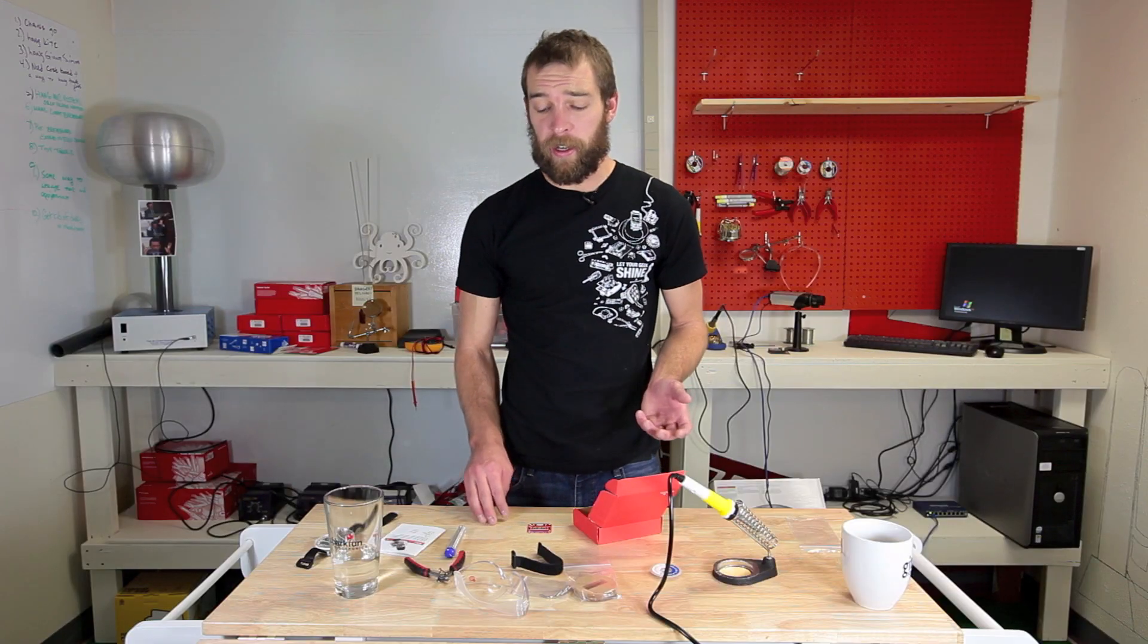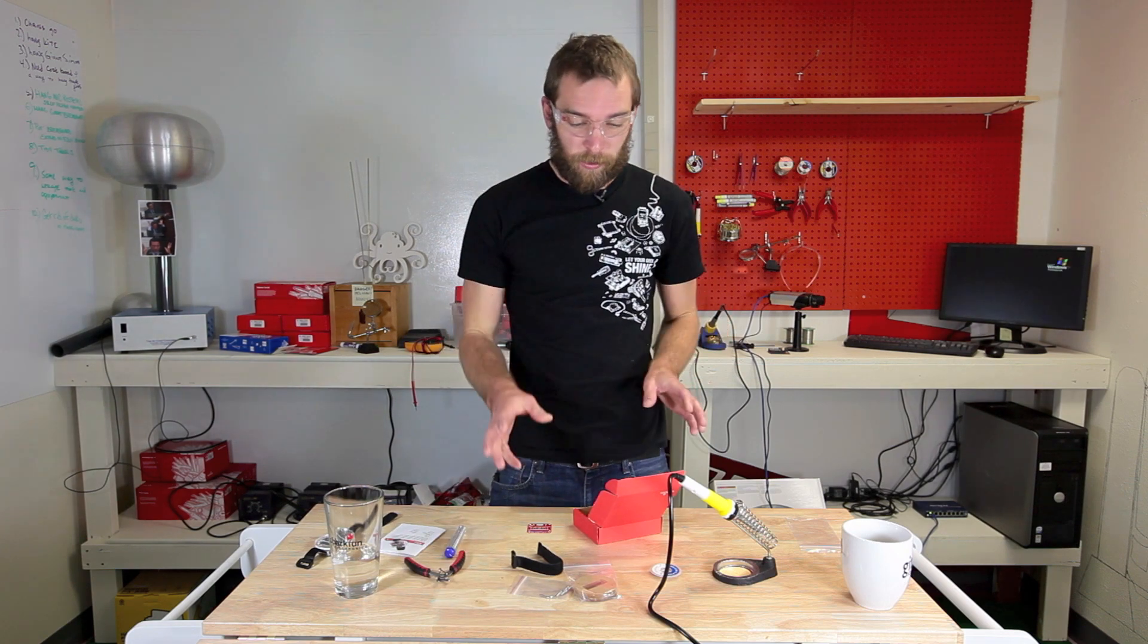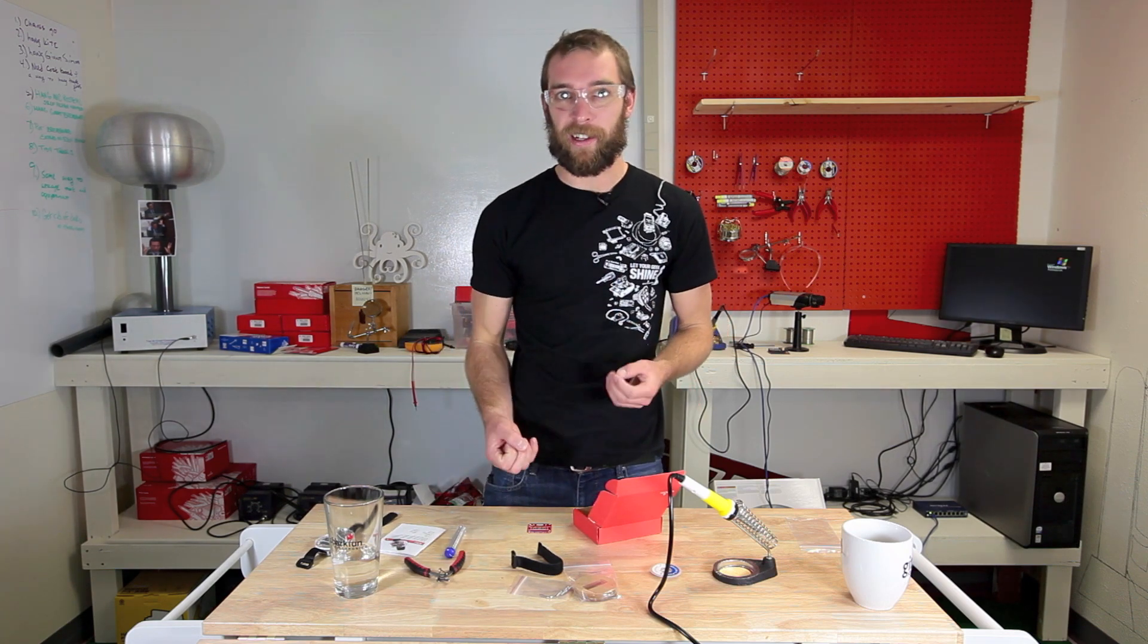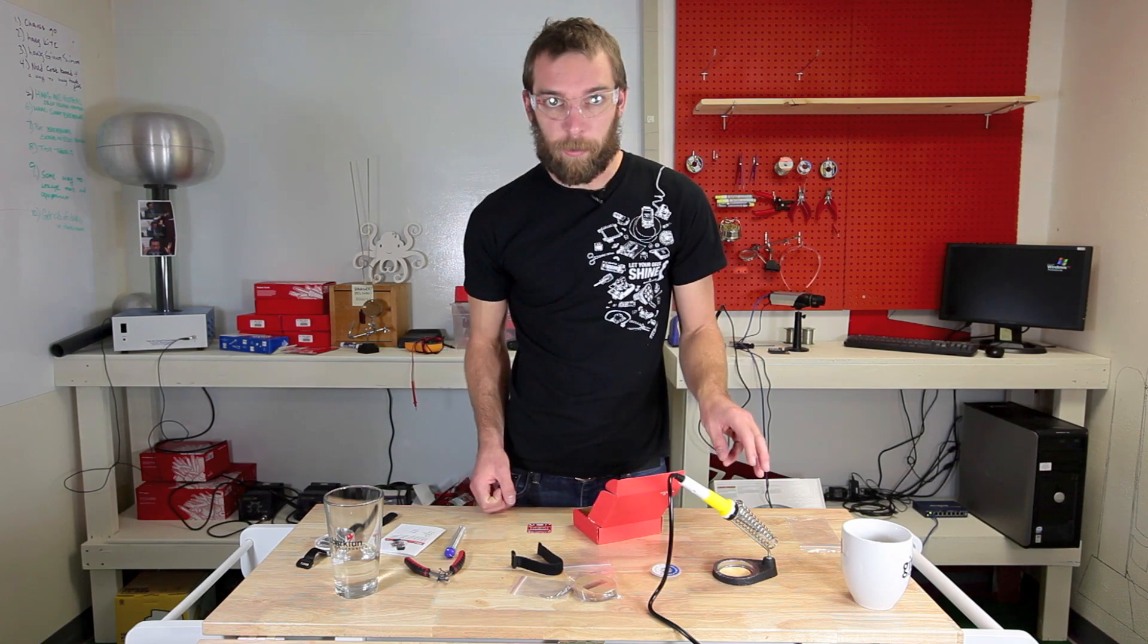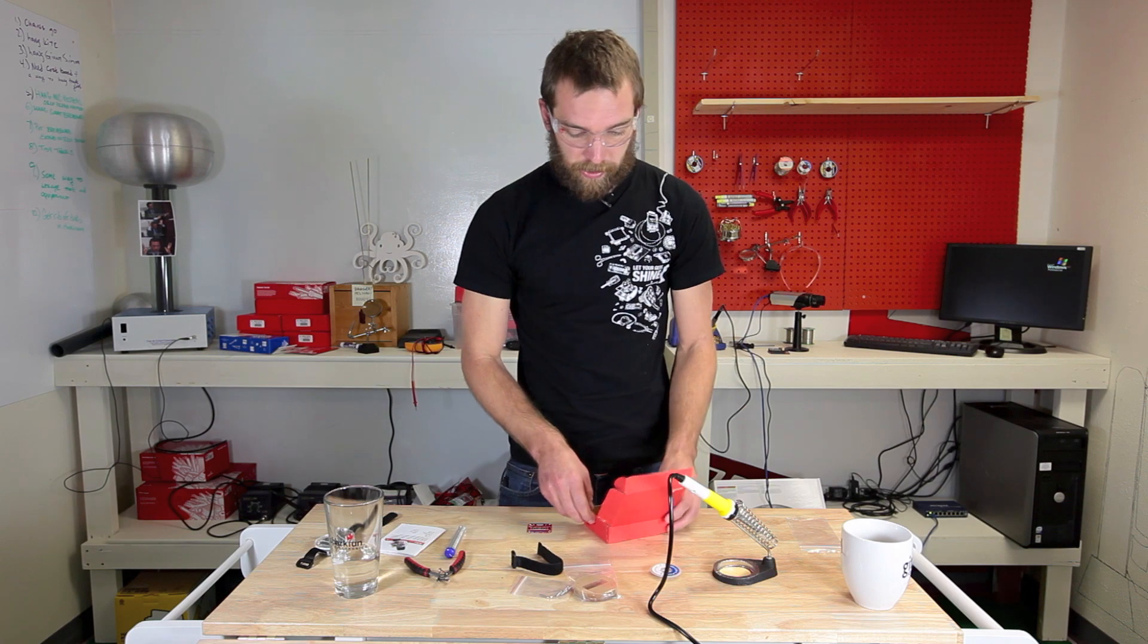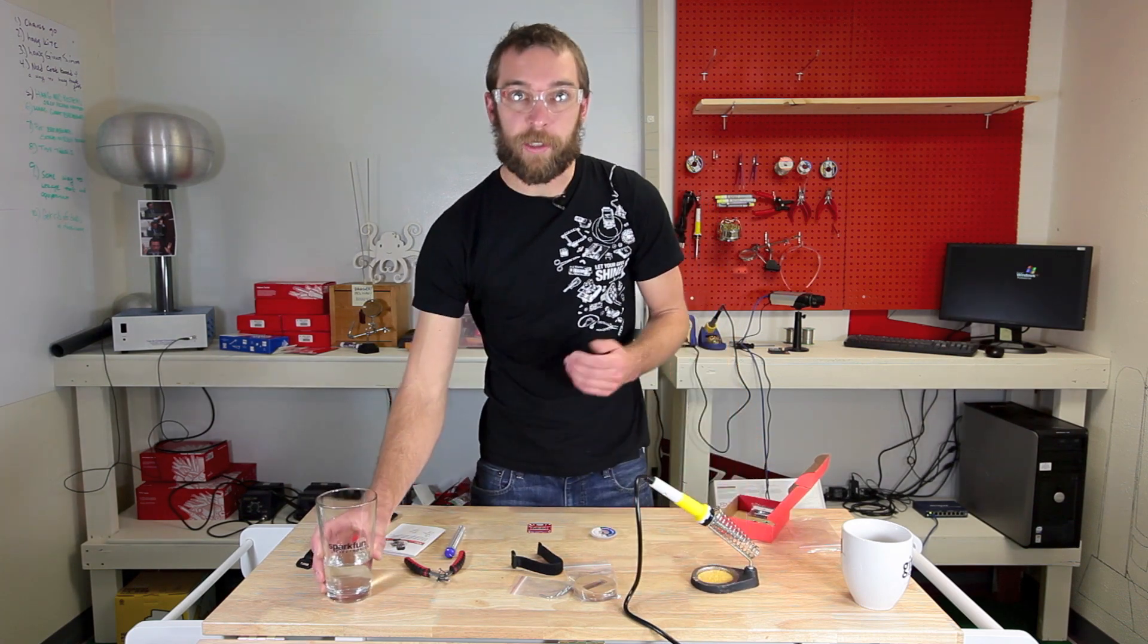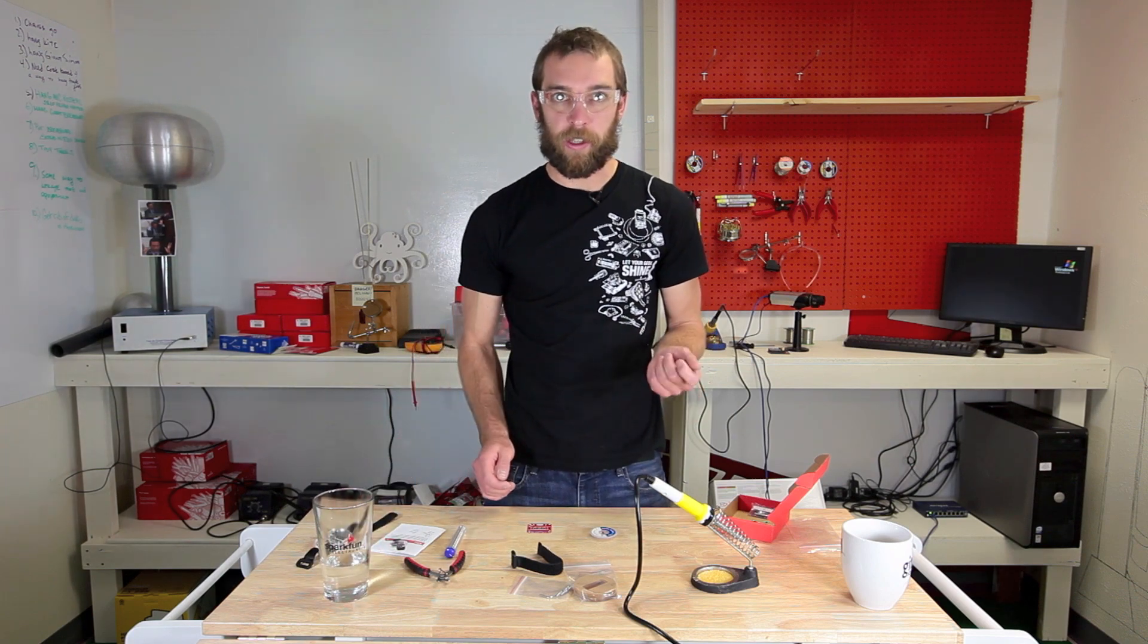Before we get started with the actual soldering, you've got to remember, safety first. I'm going to put on my safety glasses just so no stray little pieces go flying into my eye, because that would be a bummer. As you can see, I've already assembled my soldering iron holder just by screwing in the metal bit to the base. And now I'm going to add a little bit of water to the sponge underneath. We'll use this sponge to clean the soldering iron tip in between solders.